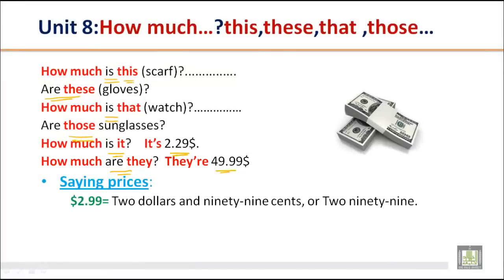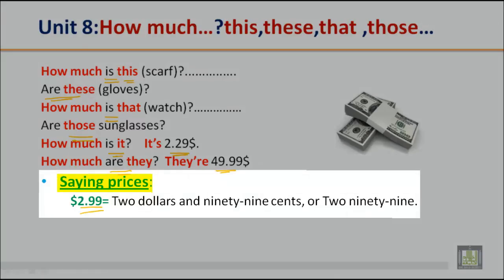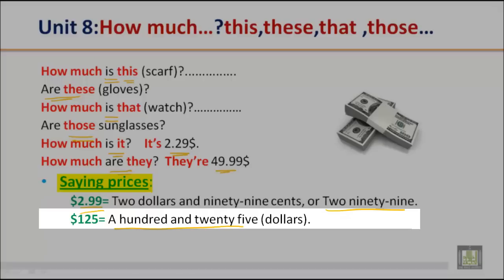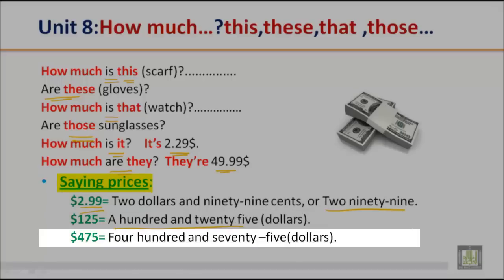Let's see how we will say the price. So, this is how we will say $2.99. $2.99 or two dollars and ninety-nine cents simply. $125. $475.